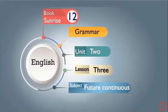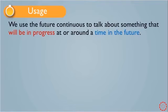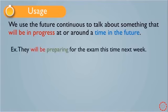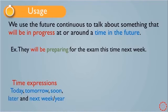Hello dear students. Today in grammar, Unit 2 Lesson 3, we are going to talk about another tense in the English language, which is Future Continuous. Let's get started. We use the Future Continuous to talk about something that will be in progress at or around a time in the future. Look at this example: 'They will be preparing for the exam this time next week.' Some time expressions used with Future Continuous are: today, tomorrow, soon, later, and next week or year.